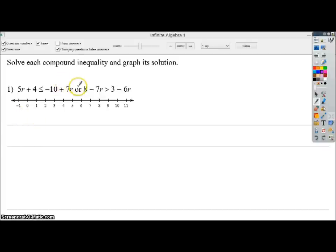So the first thing I'm going to do is identify what type of statement it is, it's an or statement, which means I could probably guess that the arrows are going to be facing away from each other, because our solution set will be one or the other, as opposed to a combination of both. So, from here, I'm going to do 5r plus 4 is less than or equal to negative 10 plus 7r, and then over here, I'll do 8 minus 7r is greater than, I'm almost going to say less than there, greater than 3 minus 6r.